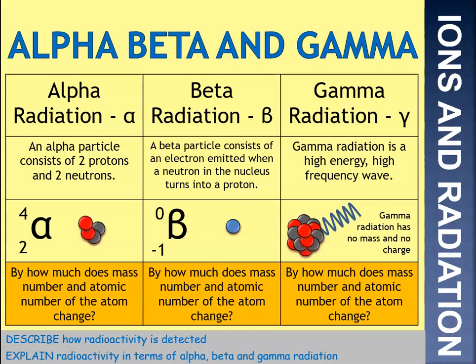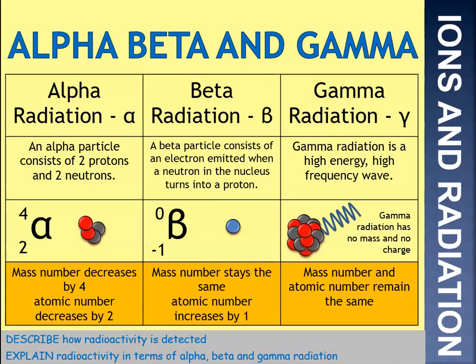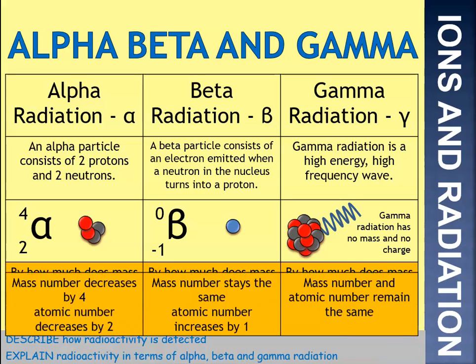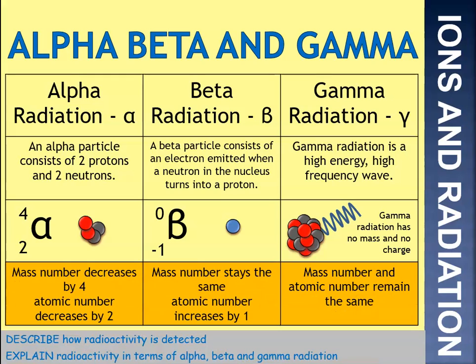Beta radiation consists of an electron emitted when a neutron in the nucleus turns into a proton. The electron is fired out and the proton stays behind in the nucleus. The mass number stays the same — a neutron changes into a proton, which weighs exactly the same — but the atomic number increases by one. Finally, gamma radiation is a high-energy, high-frequency wave. It's got no mass and no charge, so it's not deflected by anything — it carries straight through. When gamma is emitted, the mass number and atomic number do not change at all.